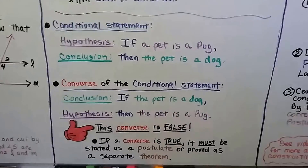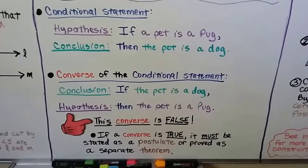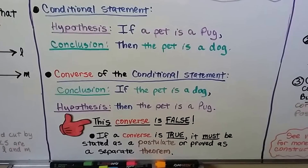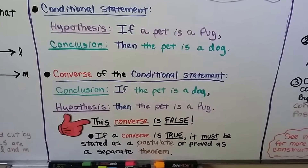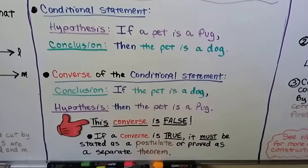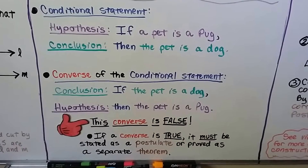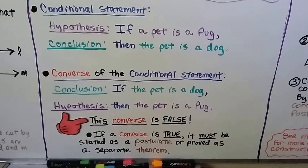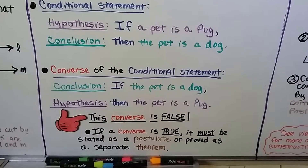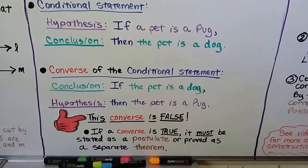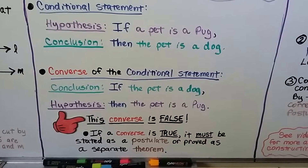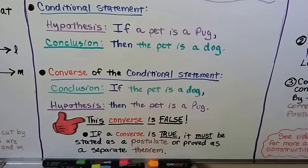A little recap. A conditional statement has a hypothesis and a conclusion — the hypothesis is the 'if' and the conclusion is the 'then.' For example, the hypothesis is 'if a pet is a pug' and the conclusion is 'then the pet is a dog.' That's true — if you have a pet pug, then you have a dog. The converse swaps them: 'if the pet is a dog, then the pet is a pug.' Well, that's not true. Just because you have a dog doesn't mean it's a pug. So this converse is false.